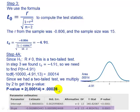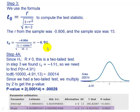We can also get this value from StatCrunch from our earlier linear correlation coefficient output — it also shows us this information. We look at the slope row of the table, and it gives us our T statistic, which is very close to what we calculated: we had negative 4.91 and StatCrunch shows negative 4.903. It gives the p-value as 0.0003, the same as what we get if we round our manual result to four decimal places.